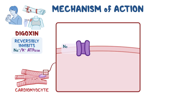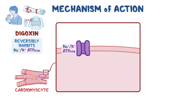Normally, the sodium-potassium ATPase pumps three sodium ions out of the cell for every two potassium ions that it pumps in, and to do this, it consumes one ATP molecule for energy. When the sodium-potassium ATPase is inhibited by digoxin, sodium builds up inside the cell.